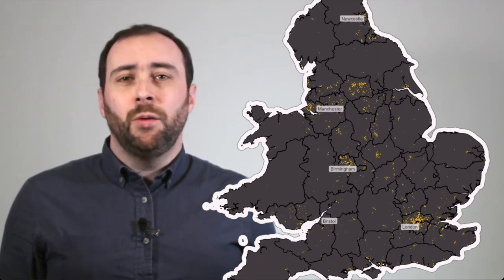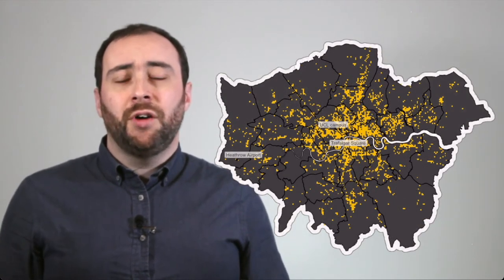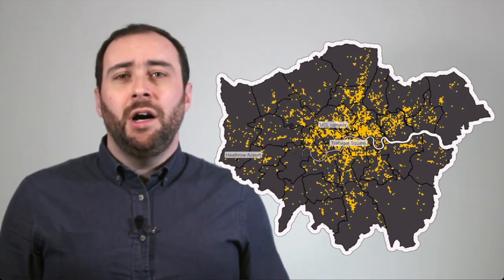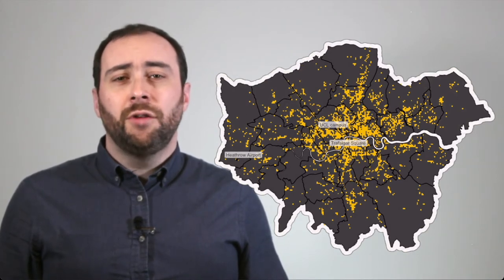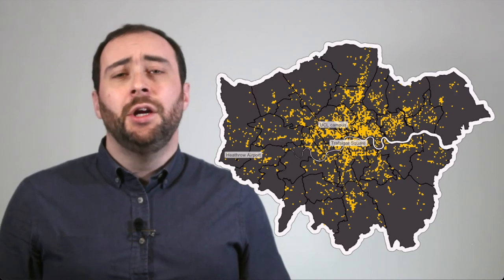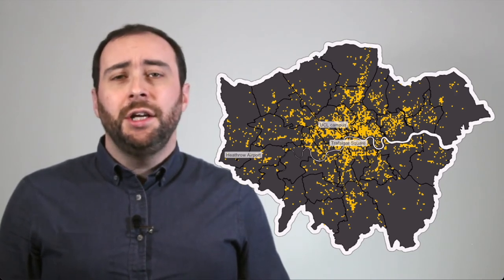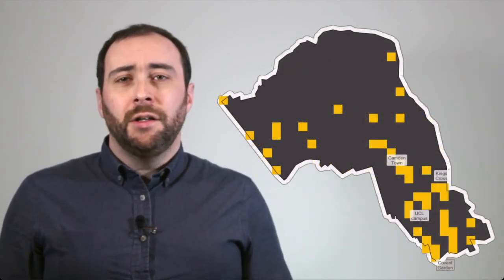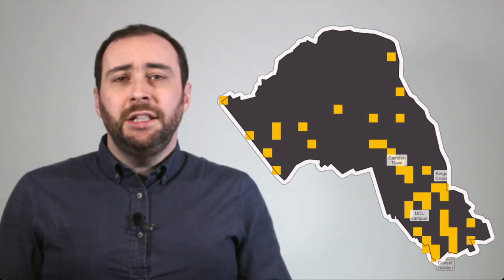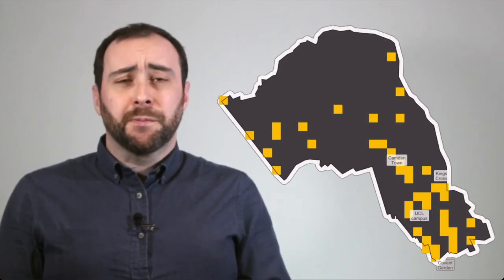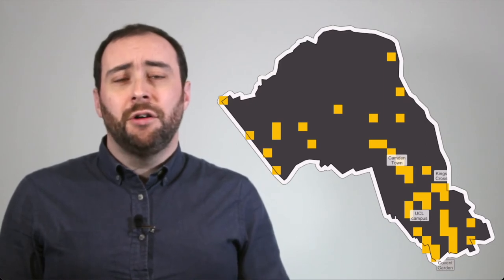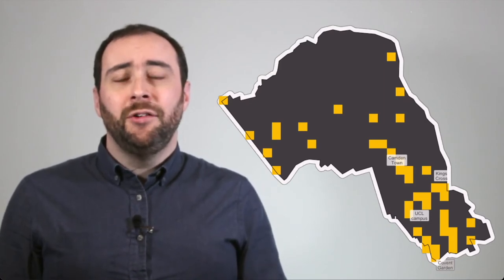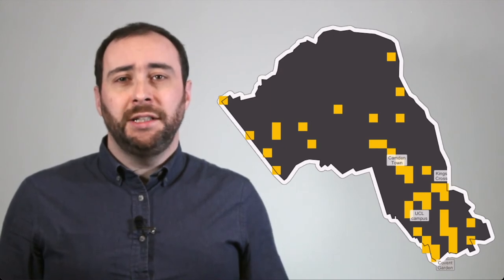And if we zoom in from England and Wales to London and do the same — count all the violent crimes in each cell and then highlight the cells that contain half of crime — we can see that in London, crime is concentrated in a relatively small number of grid cells. And we can zoom in again to Camden, the London borough where UCL is based, and we can see in Camden too that half of violent crime in this year happened in a relatively small proportion of places.